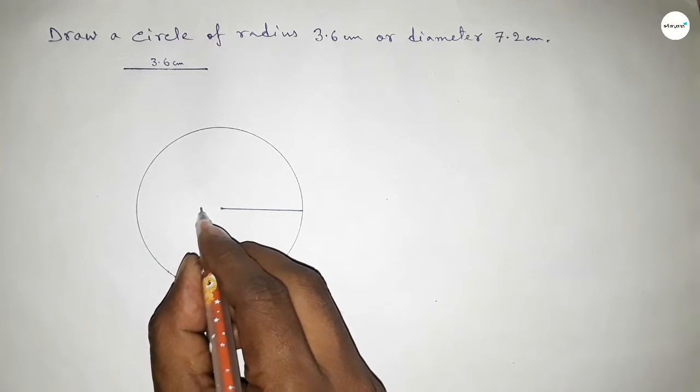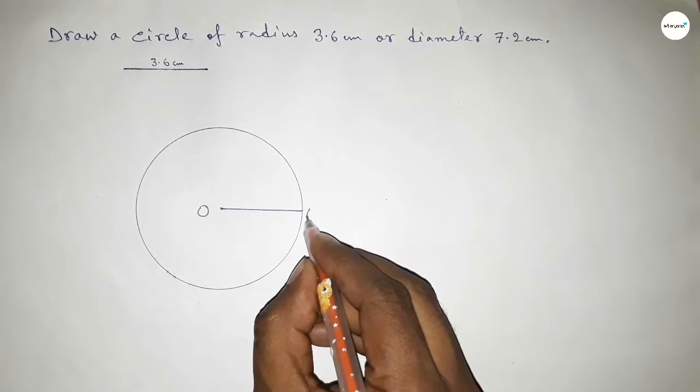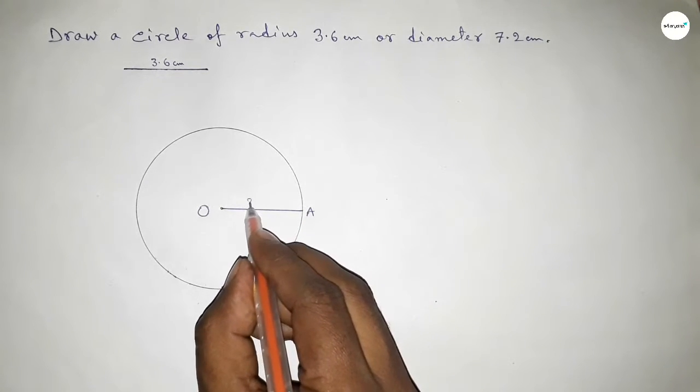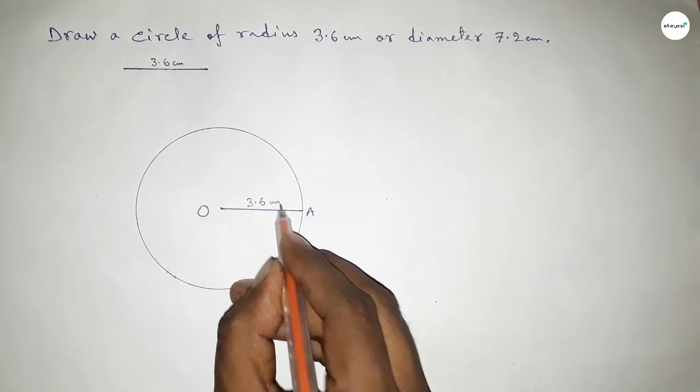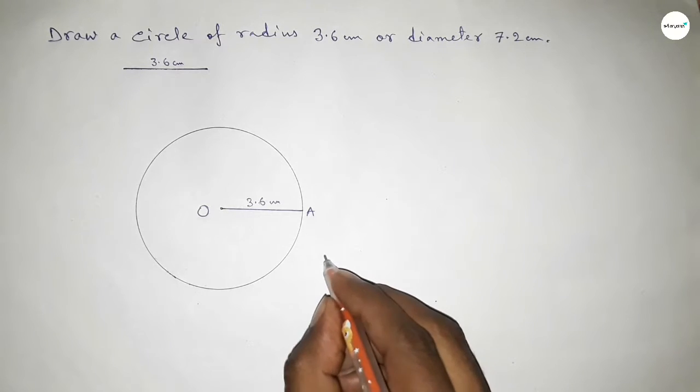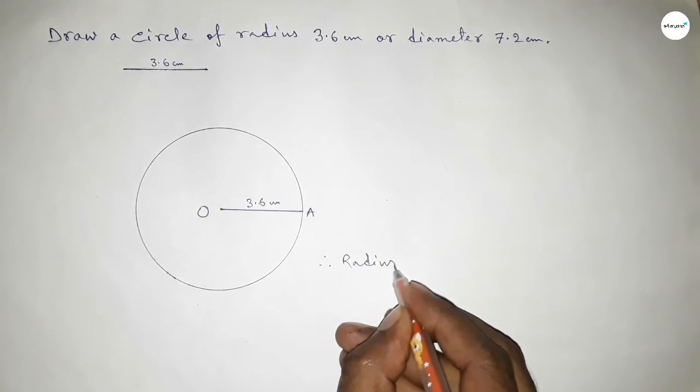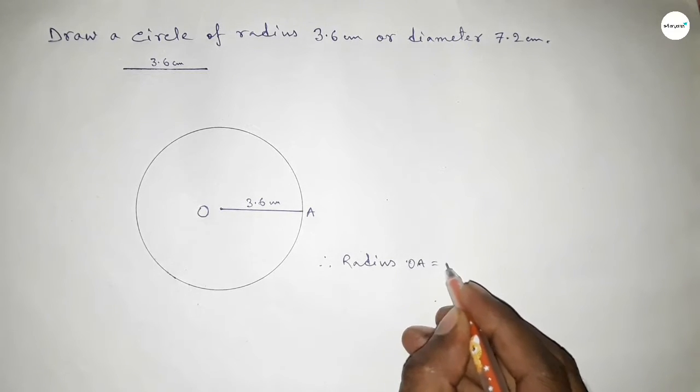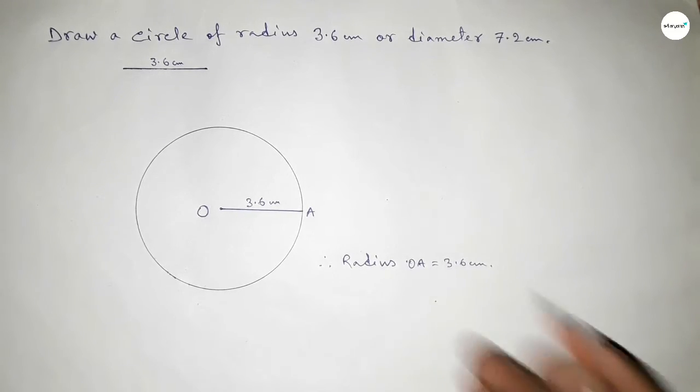So OA equals 3.6 centimeter. So therefore, radius OA equals 3.6 centimeter. That's all. Thanks for watching. If this video is helpful to you, then please share it with your friend. Thanks for watching.